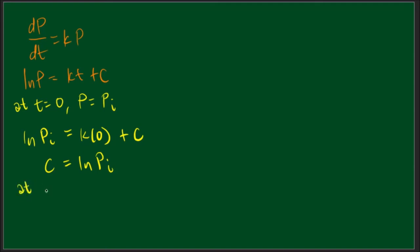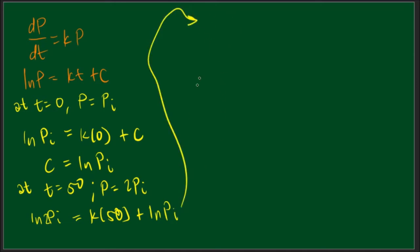Next, at t equal to 50 years, our P is two times. So we have ln 2PI equals k, our t is 50 years, plus our C, which is ln PI. So ln PI. Simplifying this one further, let's transpose this one to the other side of the equation. We end up with ln 2PI minus ln PI equals 50k.